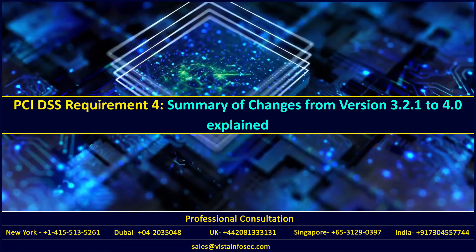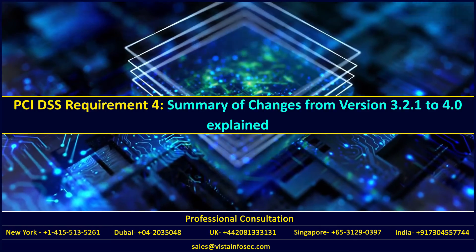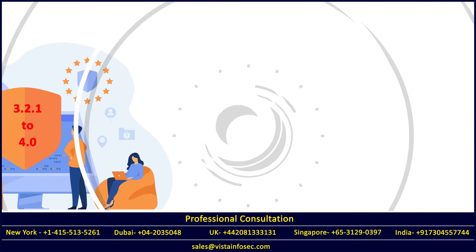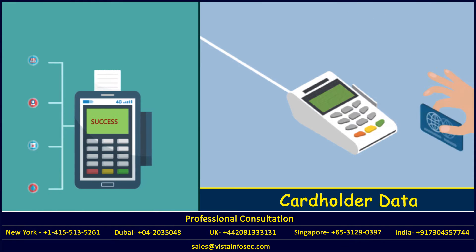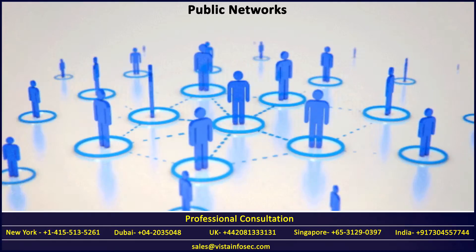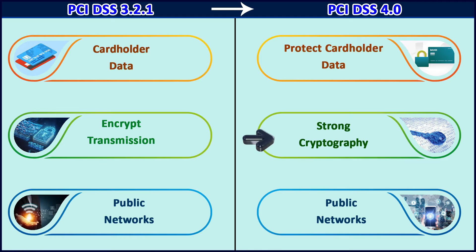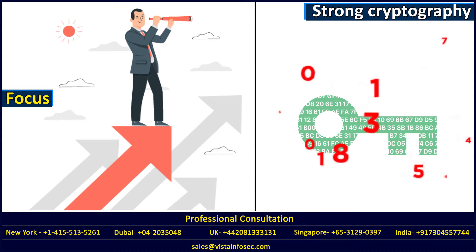Looking at the summary of changes from version 3.2.1 to 4.0: in requirement 4, the requirement was previously called 'encrypt transmission of cardholder data across open public networks.' This has now been updated to 'protect cardholder data with strong cryptography during transmission over open public networks,' reflecting a stronger focus on cryptography from the outset.